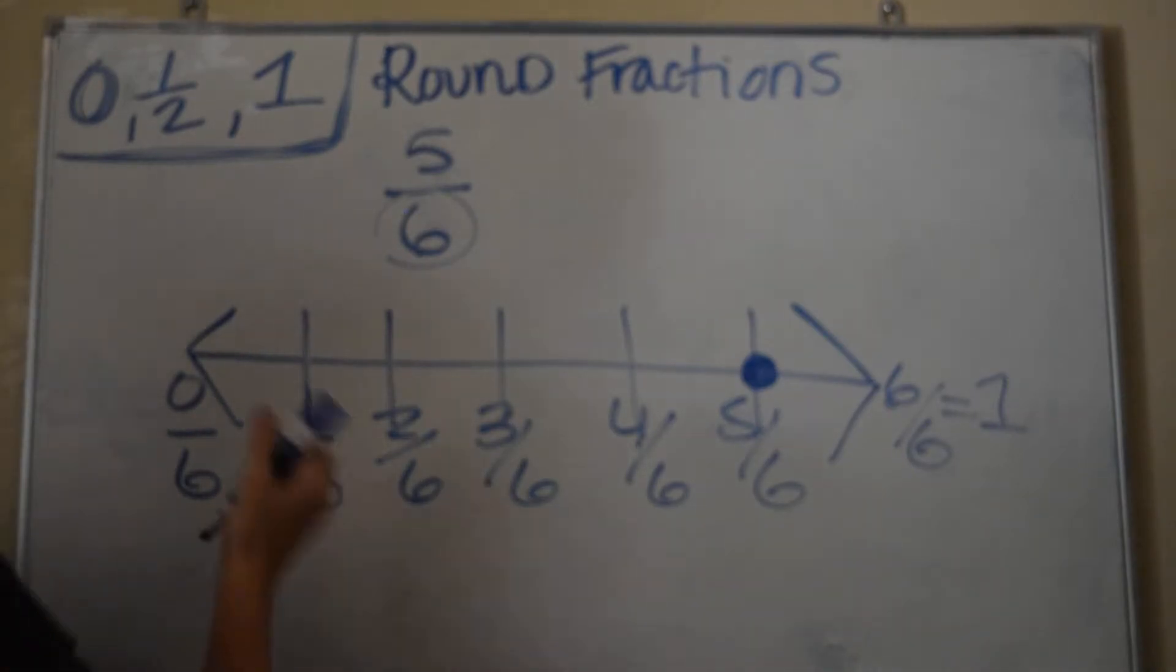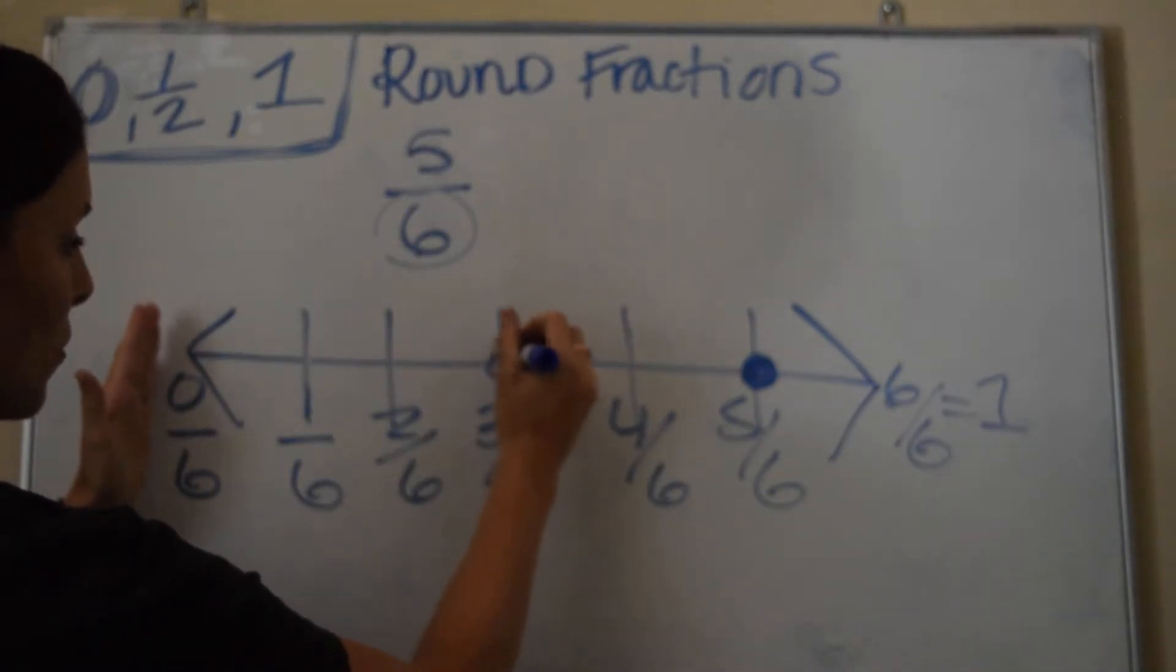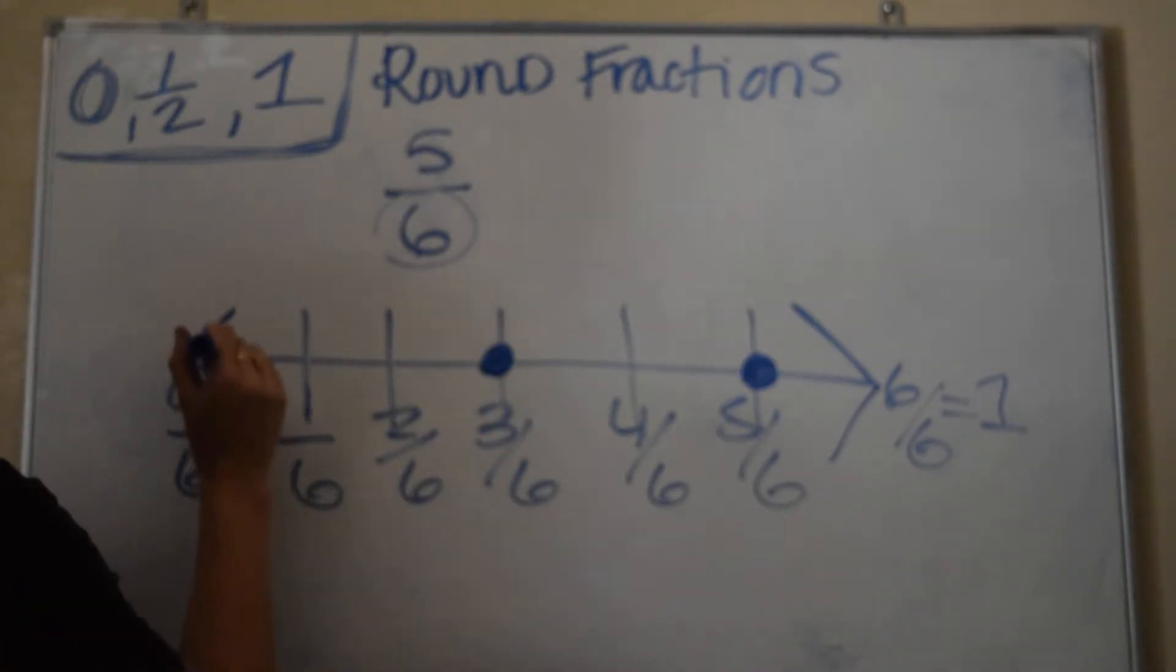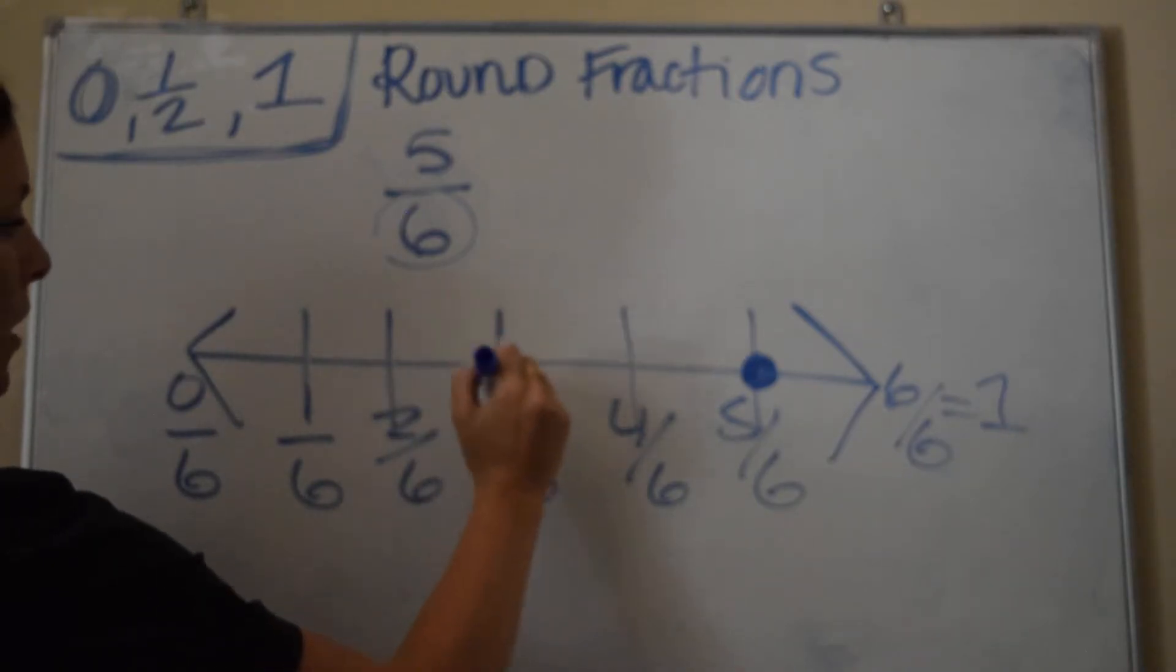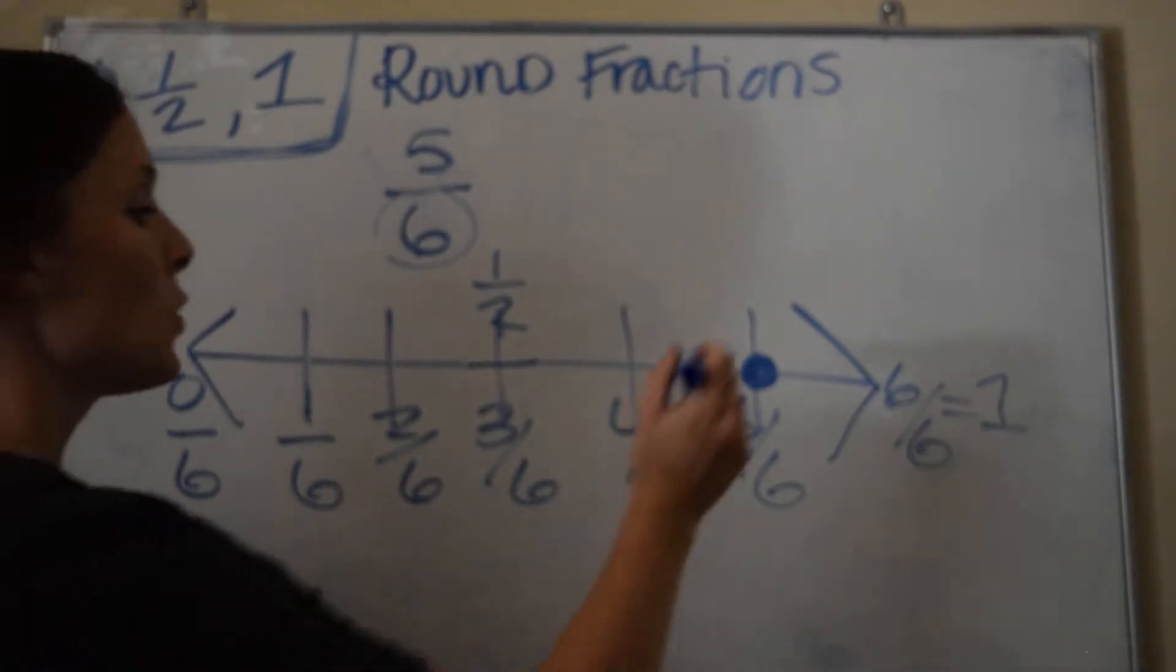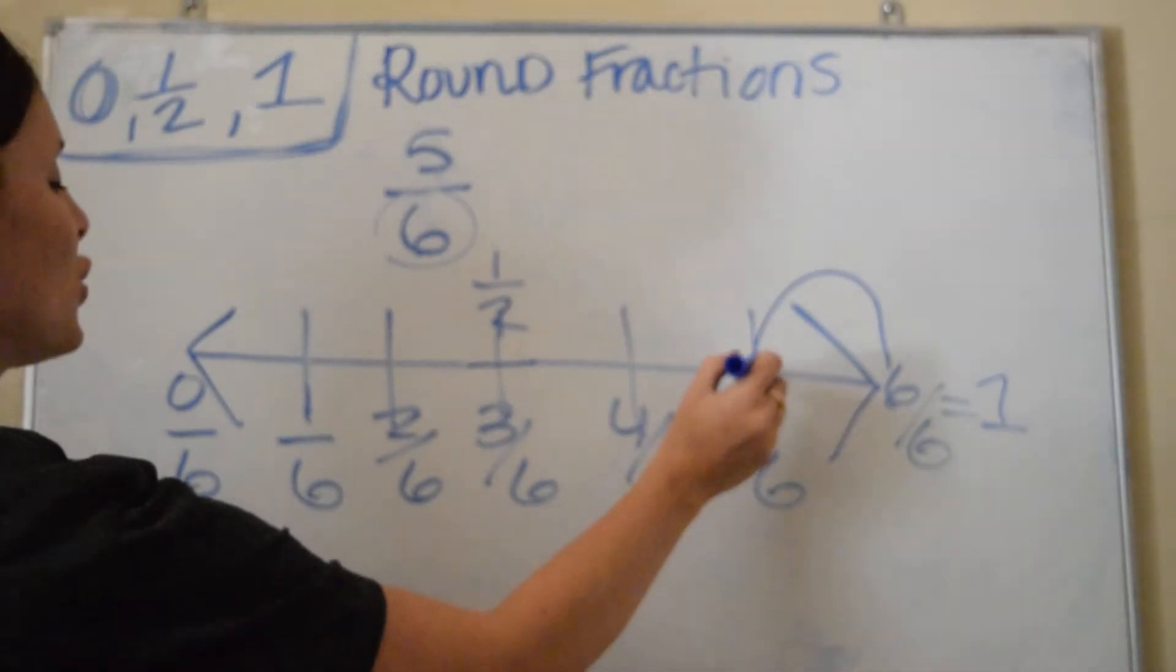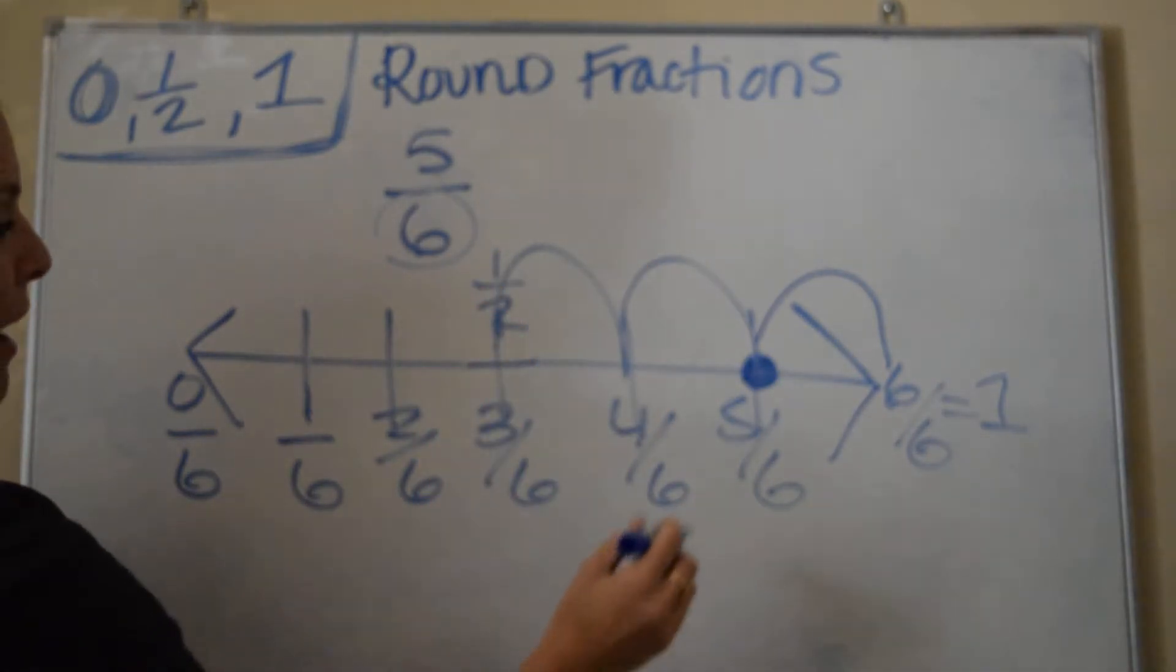Half would be halfway, which would be 3 out of 6. How do I know that? Because 3 is half of 6. So my half is right here. I'm going to write that this is also a half. So where is it closer to? Well, it's only one space from a whole, but it's two spaces from a half.